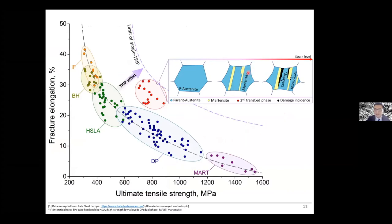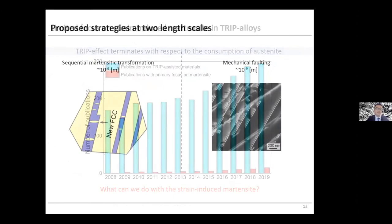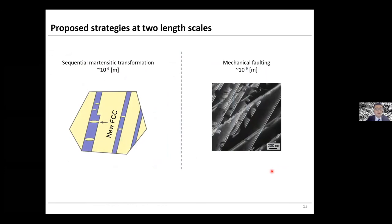This inevitably imposes an intrinsic limit on the TRIP effect: the martensite transformation product is a source of micro-scale damage nucleation. While TRIP-assisted materials continue attracting broad attention, there has been limited focus on the strain-induced martensite itself, which is the intrinsic limitation hindering further promotion of mechanical performance. The central interest of today's topic is two proposed strategies at two length scales aiming to further expand transformation-induced plasticity.